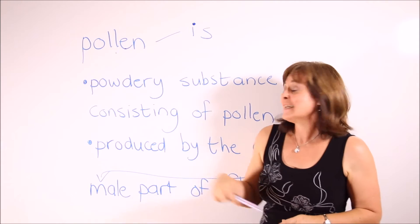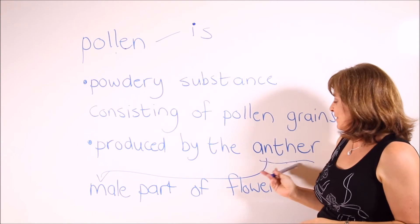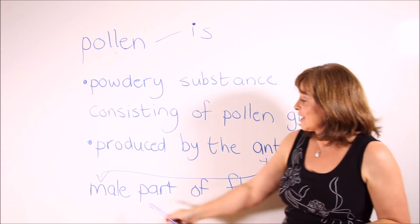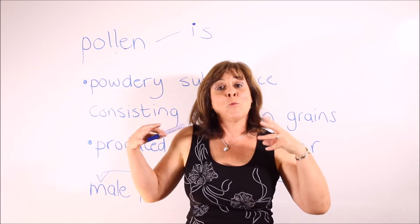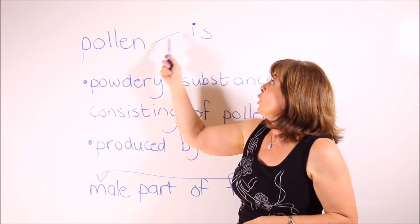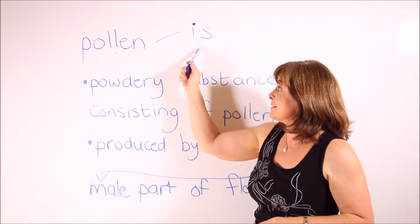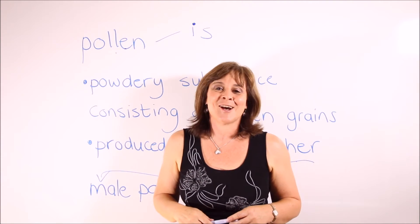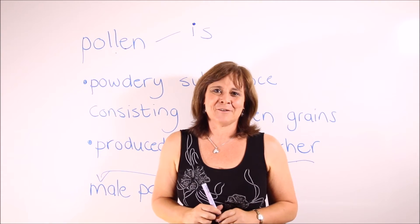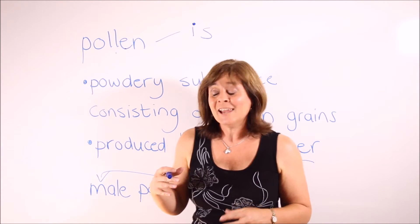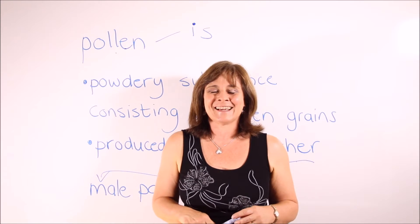Pollen is a powdery substance consisting of pollen grains, which are produced by the anther — the male part of a flower. When we use the noun 'pollen' we combine it with a singular verb: 'pollen is.' But 'pollen grains are.'